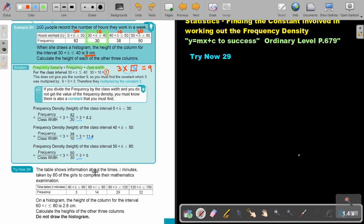The table shows the information about the times, 10 minutes, taken by 80 of the girls to complete their mathematics examination. There's the data. On a histogram, the height of the column for the interval 60 to 80 is 2.8. Let's just mark it. So 60. They are referring to this one.